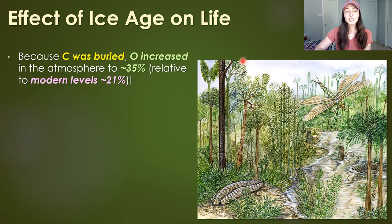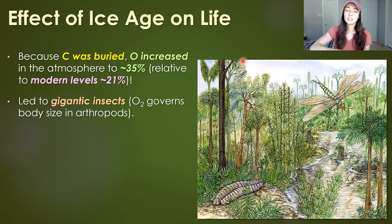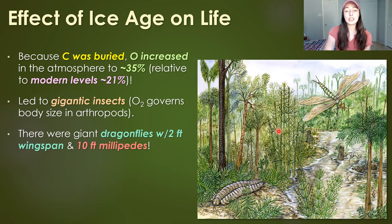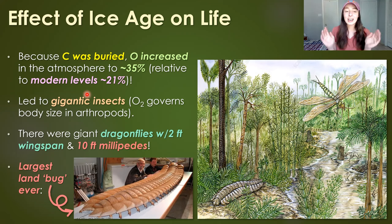The other cool effect of this ice age, like I mentioned at the beginning, was that the increase in carbon burial allowed oxygen to increase in the atmosphere to insane, never-before-seen levels of around 35%, as opposed to today's 21%. Because oxygen concentration governs body size in arthropods, giant insects resulted from this 35% oxygen level. There were giant dragonflies with over two-foot wingspans and giant millipedes that were 10 feet long — the largest land arthropod to have ever lived. I know millipedes are not insects, but 'giant arthropods' just isn't as good a thumbnail phrase.